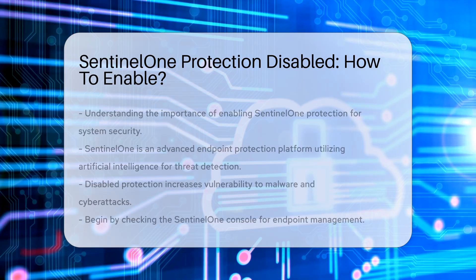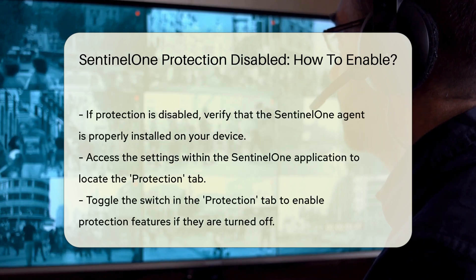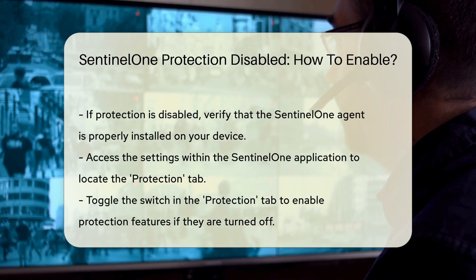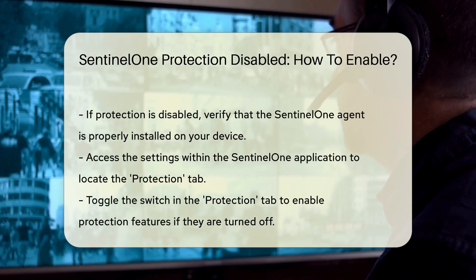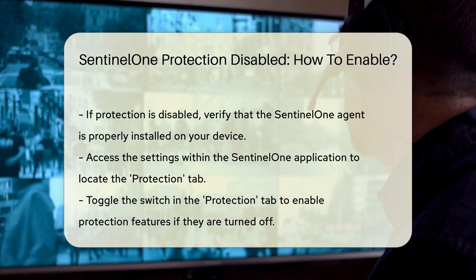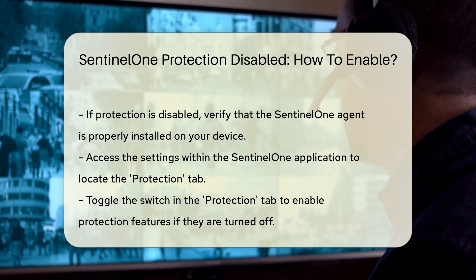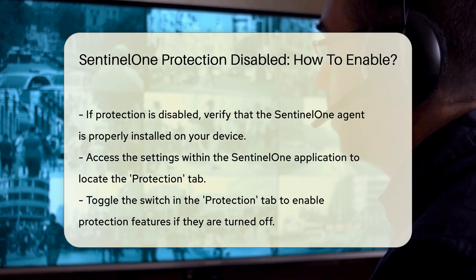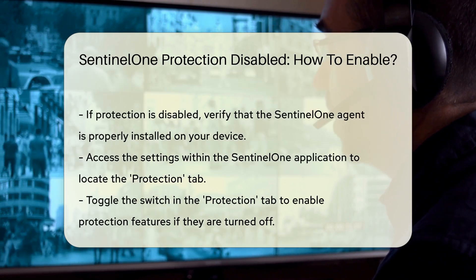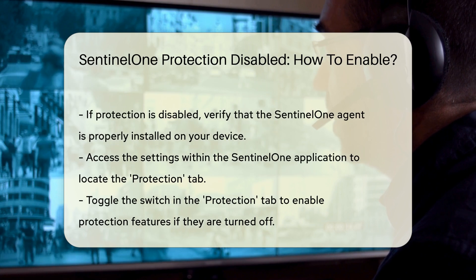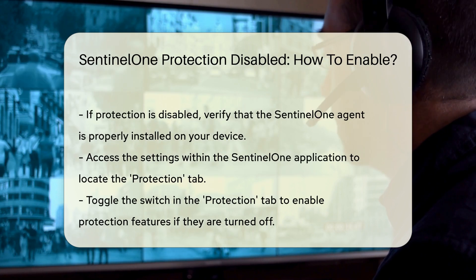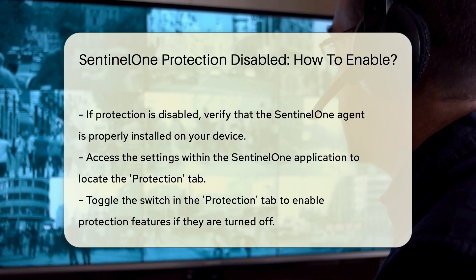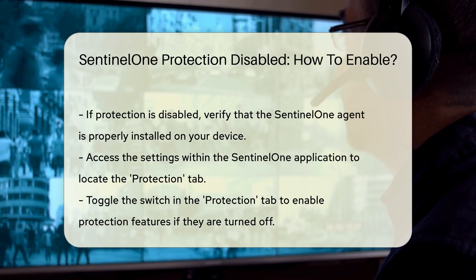If protection is disabled, it may indicate that the agent is not running or has encountered an issue. Ensure that the Sentinel-1 agent is installed correctly on your device. Next, navigate to the settings within the Sentinel-1 application and look for the Protection tab.